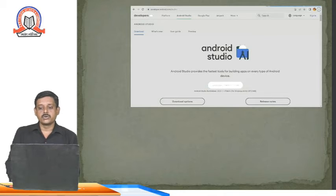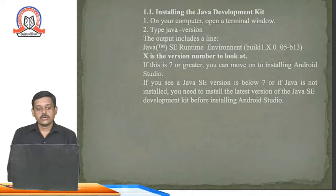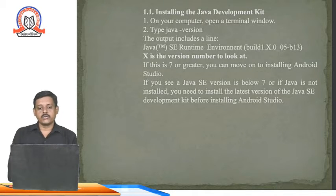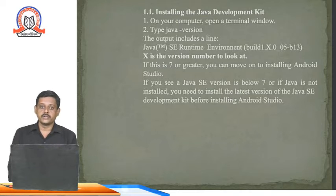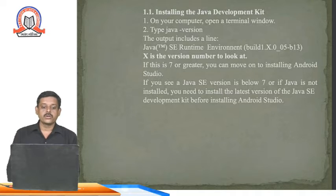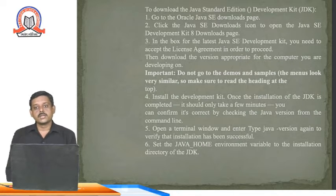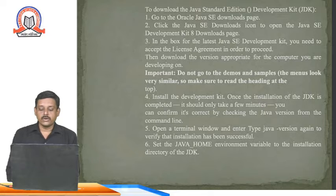To install JDK, first open a terminal window on your computer and type 'java -version'. If Java is already pre-installed on your computer, the Java command will run easily. Otherwise, you need to download Java from the Oracle website.